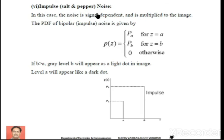Impulse noise can be removed using a median filter. In the median filter, we consider the median of a neighborhood of pixels. We take a 3×3 set of pixels and replace the center pixel with the median of those nine values. Since the median will not be the lowest or highest value, this operation effectively removes the salt-and-pepper noise from the image.